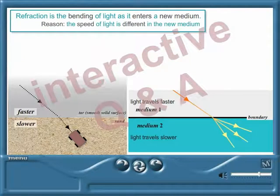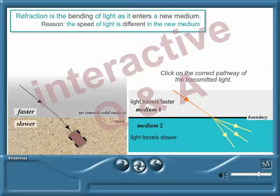Light bends when it enters a new medium for exactly the same reason. Its speed slows down when it enters medium 2. How will this cause the ray of light to bend as it passes into the new medium? Well done!